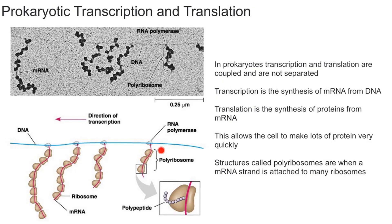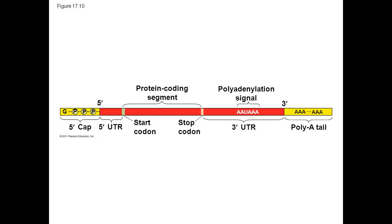Now we come to the next process: translation. Eukaryotes have a nucleus which separates the process of transcription inside the nucleus from translation outside of it. Because prokaryotes lack this compartmentalization, they are able to translate the mRNA even while it is being transcribed, by molecular complexes called ribosomes. Whereas in eukaryotes, the direct product of transcription — called the pre-mRNA — undergoes RNA processing before it leaves the nucleus.